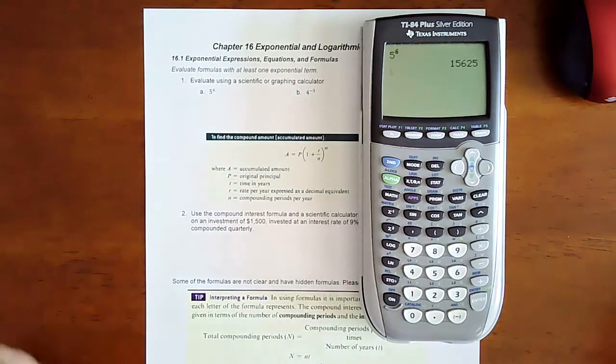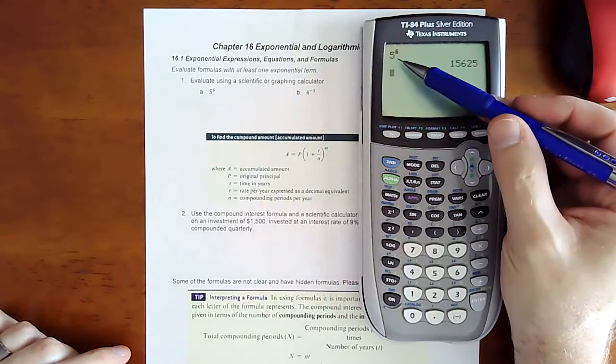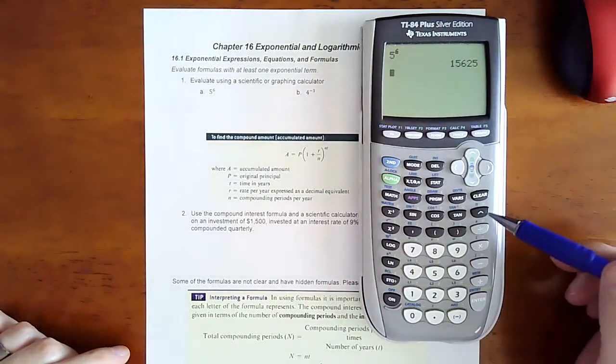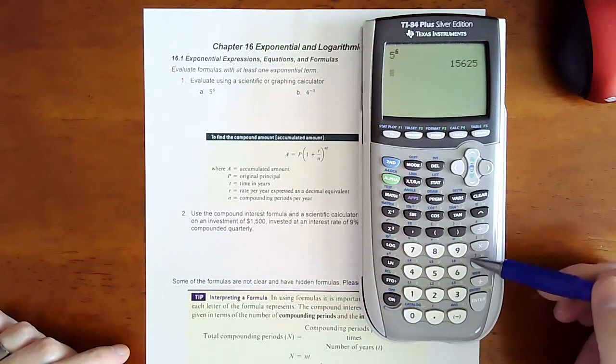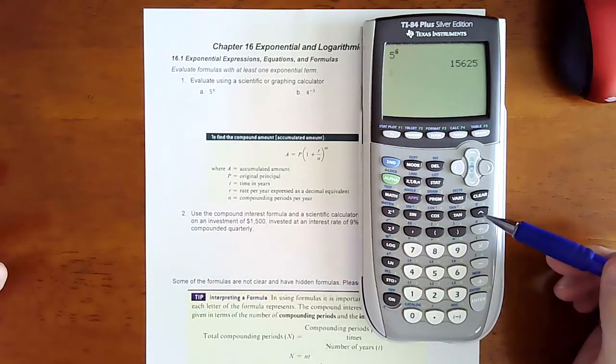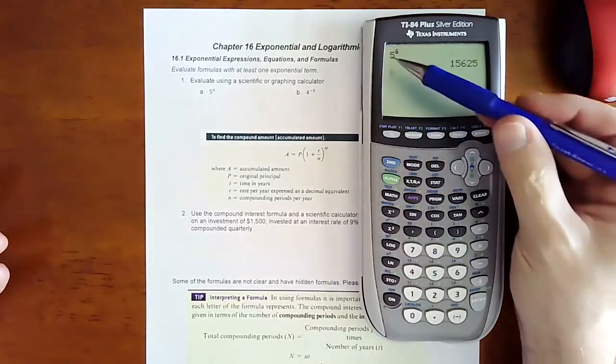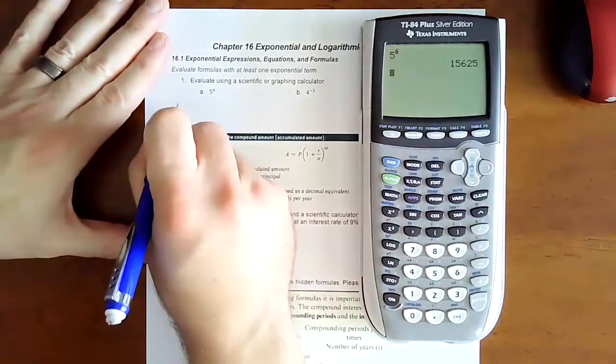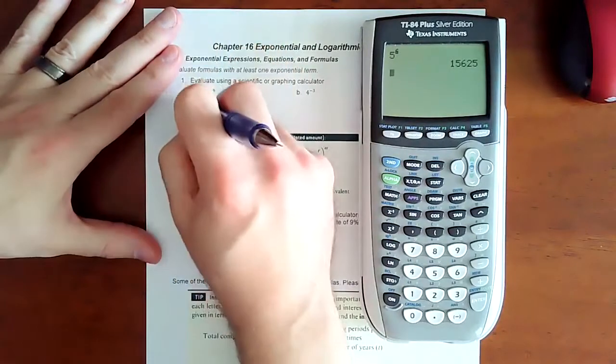If you have a little bit of an older calculator, it may not actually go up as an exponent like that. You're going to see this symbol. So it's going to be like five and then this symbol and then six. So whatever immediately after that symbol represents your power. So essentially it's doing this. So I'm going to write that down. 15,625.